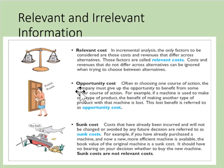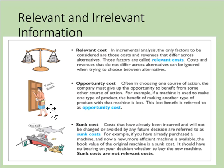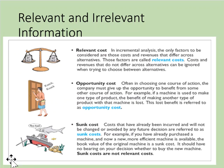We also have something called opportunity cost. This is the cost of choosing one course of action and what we must give up in order to benefit from some other course of action. For example, if we use a machine to make one type of product, the benefit of making another type of product with that machine is lost — that would be our opportunity cost. Only relevant data will affect decisions.